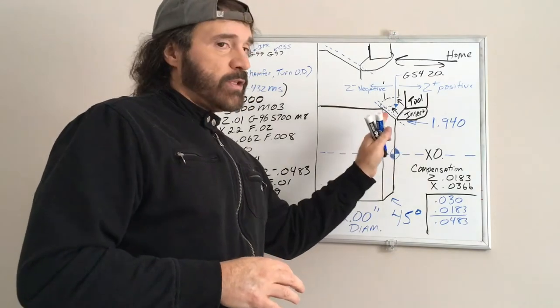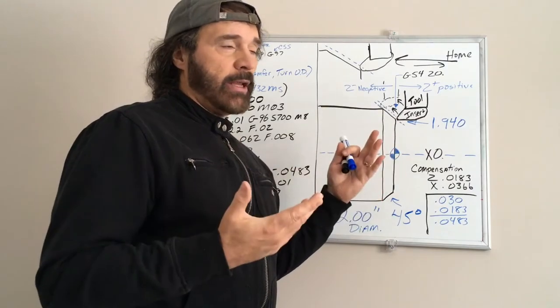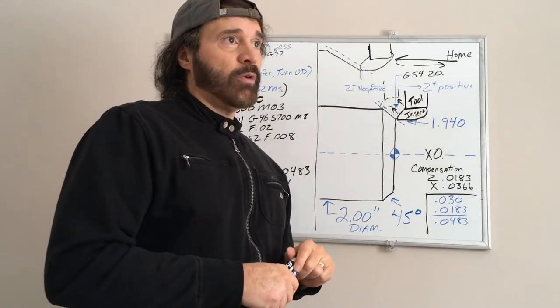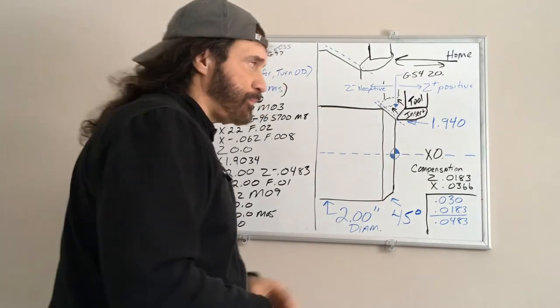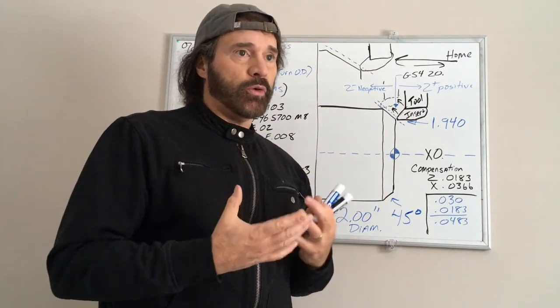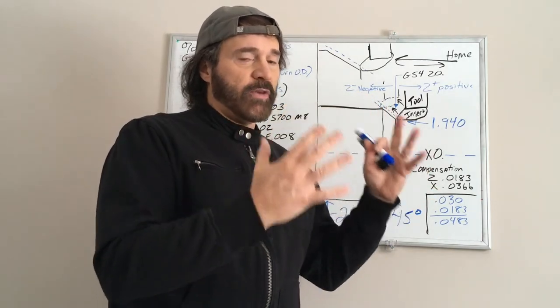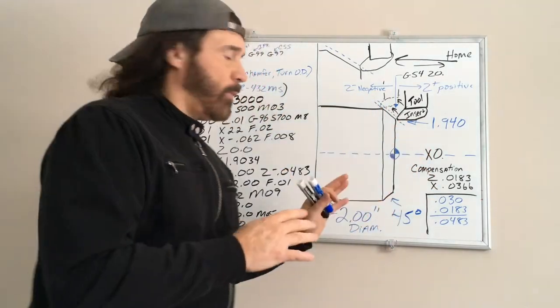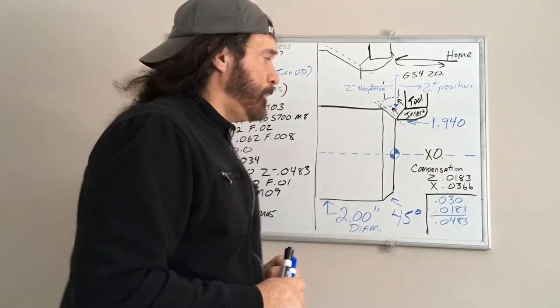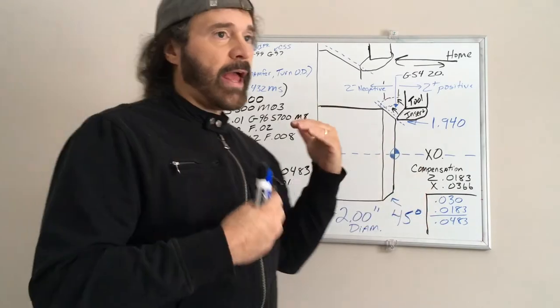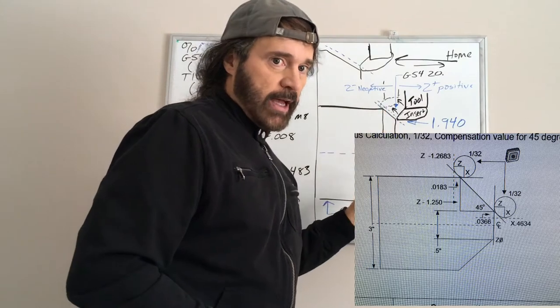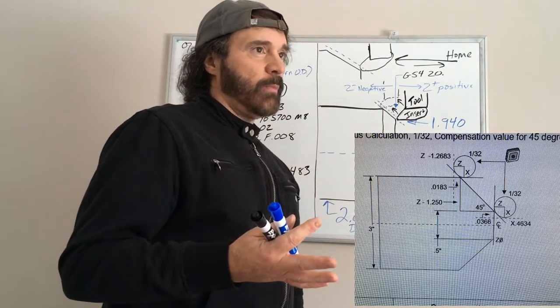When you're using a radius bit tool, which probably 99% of the time you will be, you have to add what is known as a compensation value. In the Haas manual they show you a chart that gives you those values to add. If you're doing a 45 degree angle, it'll tell you what value you have to add to your Z-axis and your X-axis.